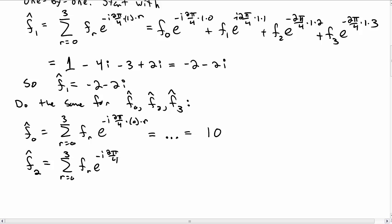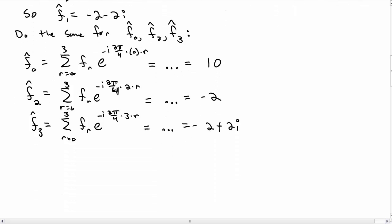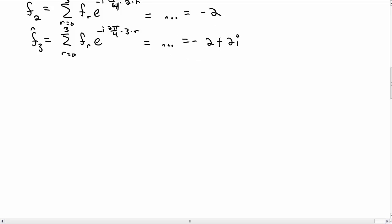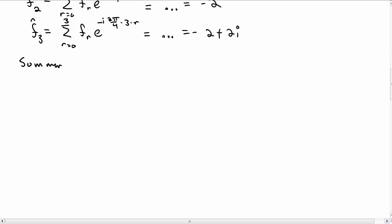Same thing for f hat sub 2, now there's a 2 up in the exponent, and doing the calculation you get minus 2. And the same thing for f hat sub 3, now we put a 3 up in the exponent for the sum, and you should get minus 2 plus 2i. I just skipped all the calculations there, but that's what you would get when you do those sums.